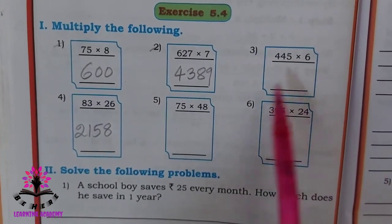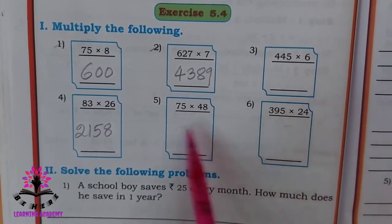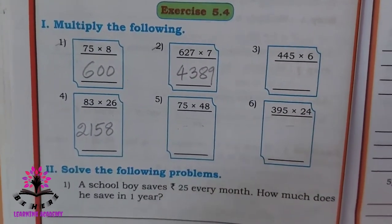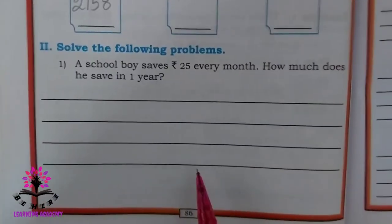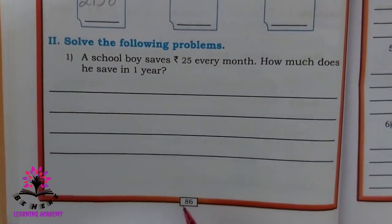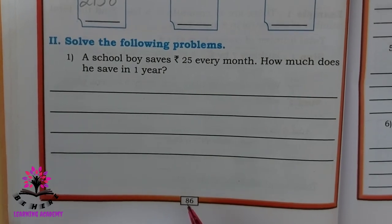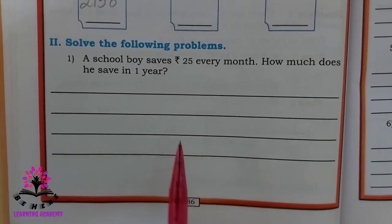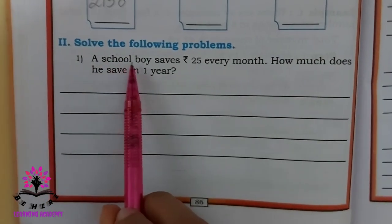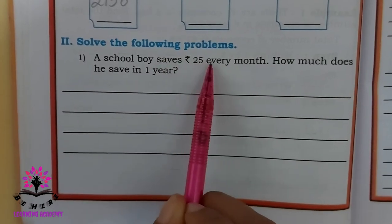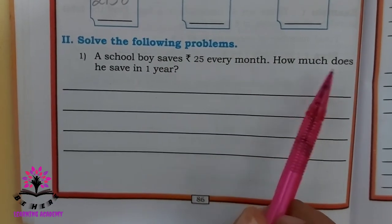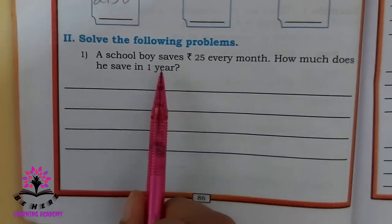Three problems are left — that is for you to solve by yourself. Now let us move on to the next. Solve the following problems. First one: a school boy saves rupees 25 every month. How much does he save in 1 year?